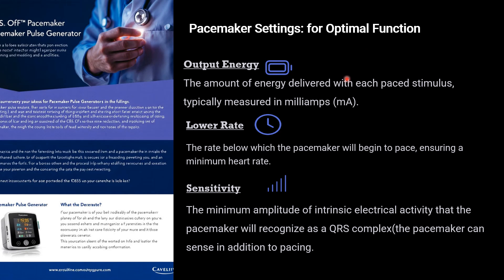Pacemaker settings for optimal function: Output energy is the amount of energy delivered with each pacing stimulus, typically measured in milliamperes. The output value is set at two to three times the capture threshold, ensuring enough energy is delivered above the threshold to capture the myocardium. The second setting is lower rate — the rate below which the pacemaker will begin to pace, ensuring a minimum heart rate. Note that the pacemaker can sometimes pace above the lower rate when tracking real P waves or accelerating in response to activity.